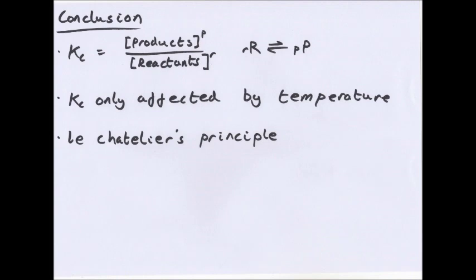And that is that. Thank you for watching. So in conclusion, Kc is products to the power of P over reactants to the power of R. Kc is only affected by temperature, and remember Le Chatelier's principle. Thank you for watching. Any questions, as usual, email me or leave a comment. Like, subscribe, rate, and so on. Thank you for watching, and goodbye.